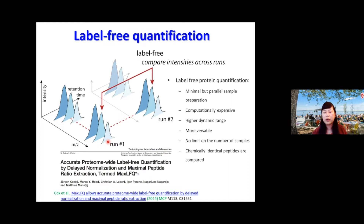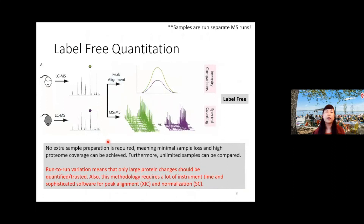One thing you would recognize is that label-free quantification relies on substantial instrument time. Another way to perform label-free quantification besides area under the curve is the MS/MS spectral counting approach. This is based on the hypothesis that higher protein abundance leads to a greater number of tryptic peptides and therefore a larger number of MS/MS spectra — so you count spectra to infer relative protein abundance. Some drawbacks are run-to-run variation requiring stable LC retention time, significant instrument time, and more sophisticated software for peak alignment.